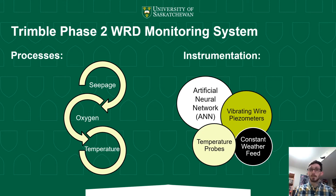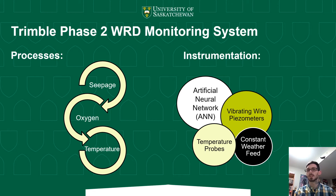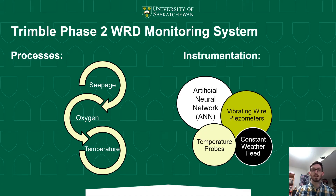Monitoring is an extremely important and sometimes underrated component of the waste rock dump. A holistic view of the dump can mean the difference between acting to stop any potential issues and reacting to fix a problem that's already underway. This is why our recommended monitoring system is an artificial neural network being fed predominantly with lead equipment like oxygen, carbon dioxide, and temperature probes in each cell, vibrating wire piezometers, and a constant weather feed so that all the data can be processed in real time, as well as having the system make accurate performance predictions.